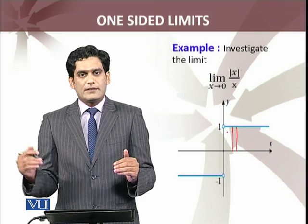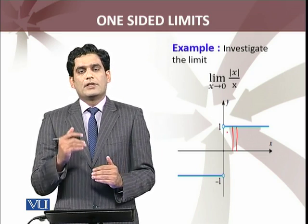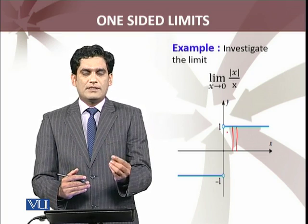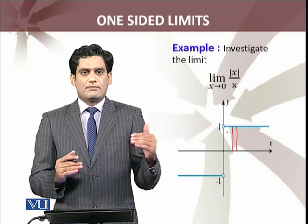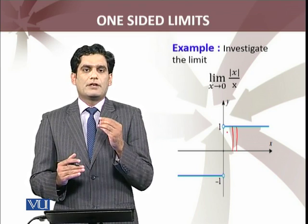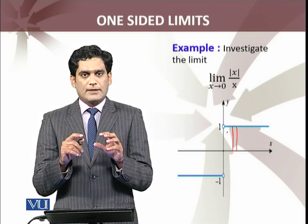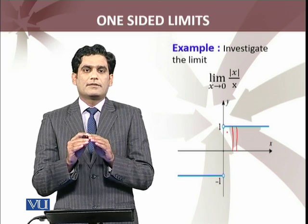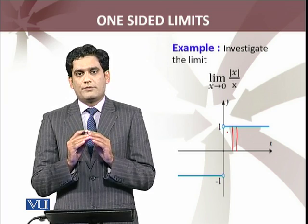If we approach 0 from the right side, the one-sided limit value is 1. And if we approach from the left side, that limit value is -1. So sided limits do exist, but the overall limit does not exist for that particular real-valued function.